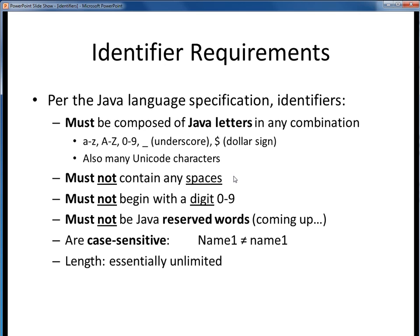Identifiers cannot contain any spaces, and they cannot begin with a numerical digit, although digits after the first character are perfectly acceptable. Identifiers cannot be the same as any of Java's reserved words, which we'll cover in the following video lecture. Identifiers are case sensitive, which means that the upper case and lower case versions of the same letter are considered to be distinct from one another.